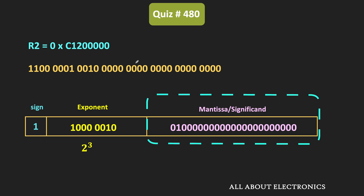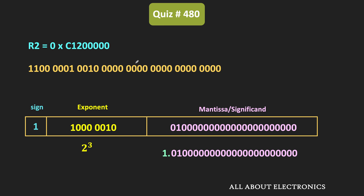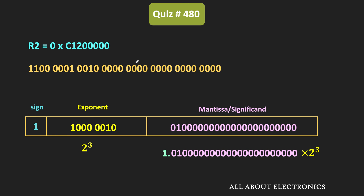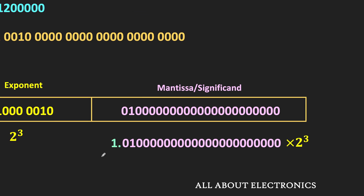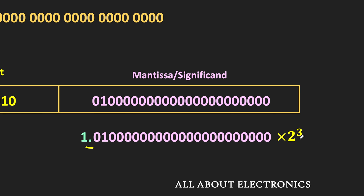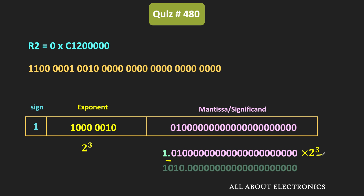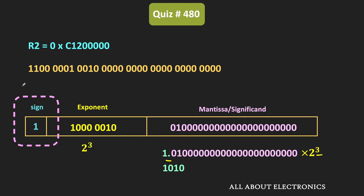Now let us look at the mantissa part. When a floating point number is represented in normalized form, just before the fractional part we have the binary point, and the digit before the binary point will always be 1. This is the actual value of the mantissa for the given number. Along with the exponent value, this is the normalized representation. To get the true binary form, we shift the radix point to the right by 3 bits since the exponent is 3, giving a binary value of 1010.000. The value in register R2 corresponds to 1010 in binary, which is 10 in decimal. Since the sign bit is 1, this is a negative number, so the value stored in register R2 is minus 10.